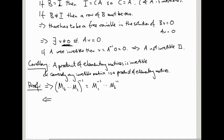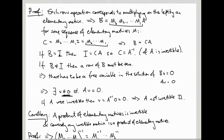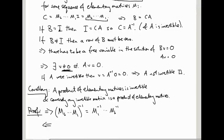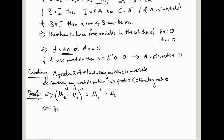And the other direction follows from the proof we've just given. You know, if A is an invertible matrix, then its inverse is this matrix C, which is a product of elementary matrices. So this follows from the proof we just saw.